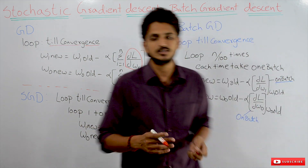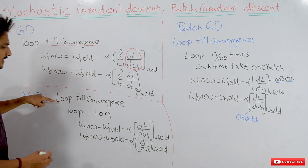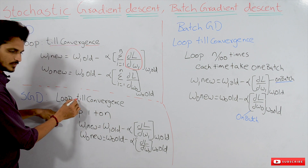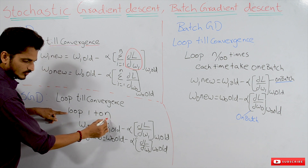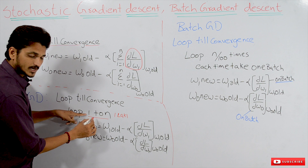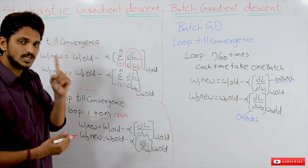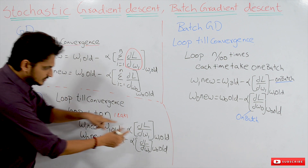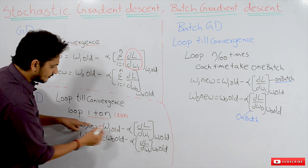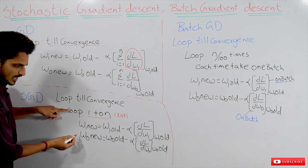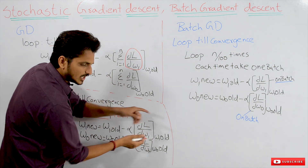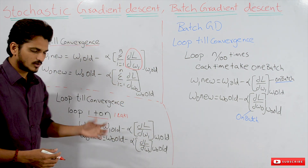To overcome this problem we go to stochastic gradient descent. In stochastic gradient descent, we have a loop till convergence. Inside that, we consider one more loop — this is a concept of loop within a loop. The inner loop runs from 1 to n. If we have 1 lakh data points, this inner loop will execute 1 lakh times. Each time it considers only one data point and computes the update value, then subtracts it from w1_old to find w1_new. Inside the loop: first point, second point, third point — update w1_new.